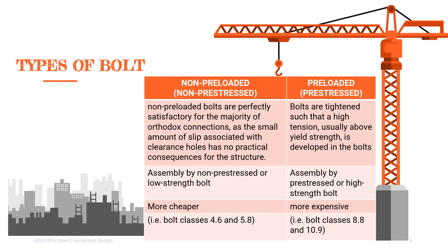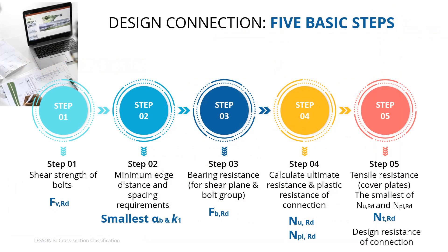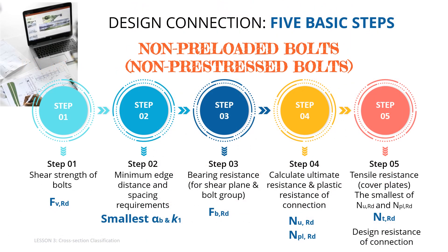Non-preloaded bolts have five basic steps for the design of a connection. We need to calculate the shear strength of bolts and minimum edge distance and spacing requirements, then choose the smallest of alpha_b and k_1. Then calculate bearing resistance for the shear plane and bolt group before calculating ultimate resistance and plastic resistance of the connection.